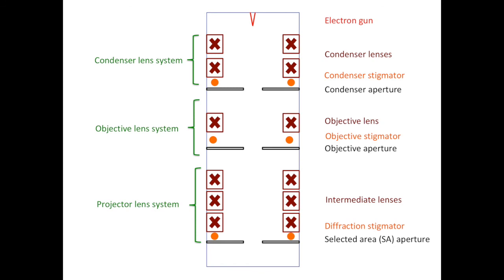Back to our TEM sketch: the fluorescent viewing screen is located at the bottom of the column, and the CCD or direct electron detector are installed even further down. In most cases, you have to lift up the screen to acquire images. In the next video, we'll look outside the TEM and learn more about the vacuum system.